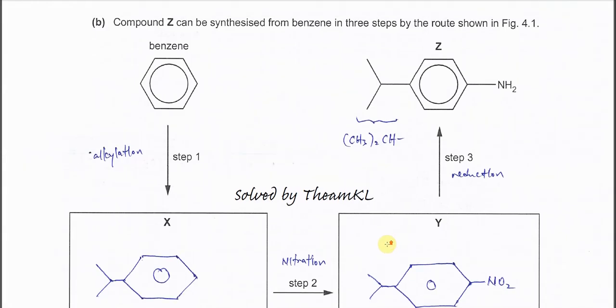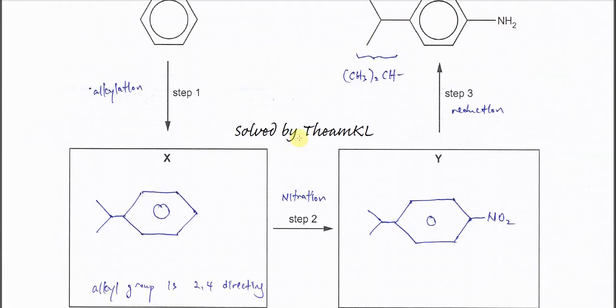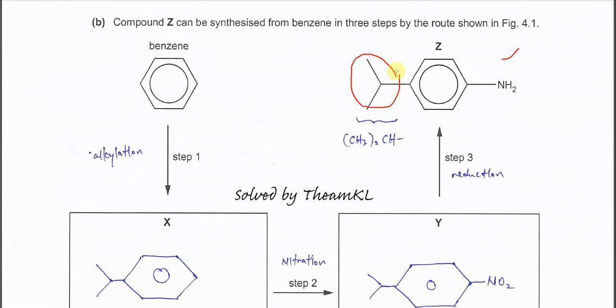Part B: Compound Z can be synthesized from benzene in three steps. We have to compare the benzene and Z. After the reaction, it has two groups added: an alkyl group and an amine. It's better for us to start with addition of the alkyl group because we know that alkyl groups are 2,4-directing. After this alkyl group is added, it will direct the addition of the nitrate group, which will eventually form the amine group.